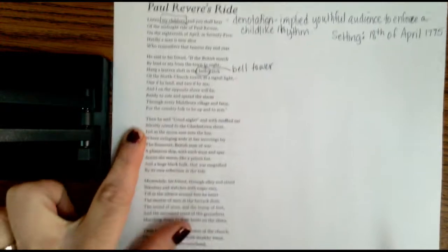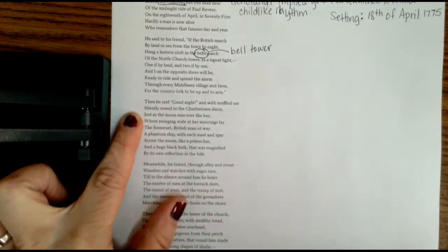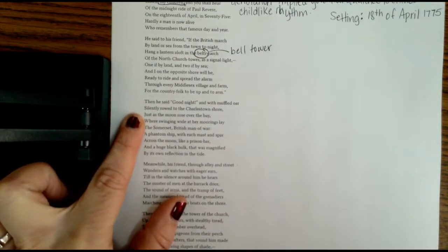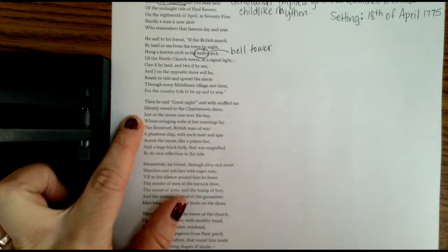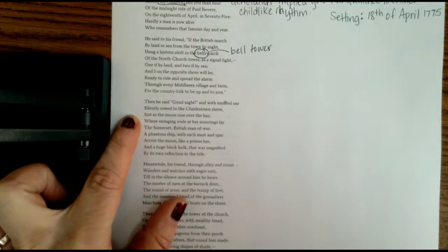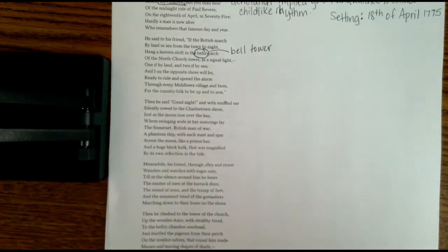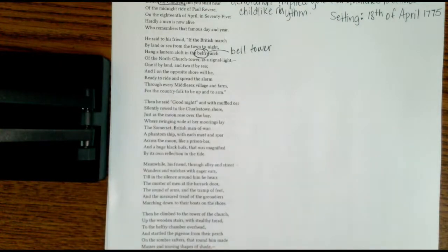Stanza three. Then he said goodnight and with muffled oar silently rode to the Charleston shore. Just as the moon rose over the bay where swinging wide at her moorings lay the Somerset, British man of war. A phantom ship with each mast and spar across the moon like a prison bar. And a huge black hulk that was magnified by its own reflection in the tide.